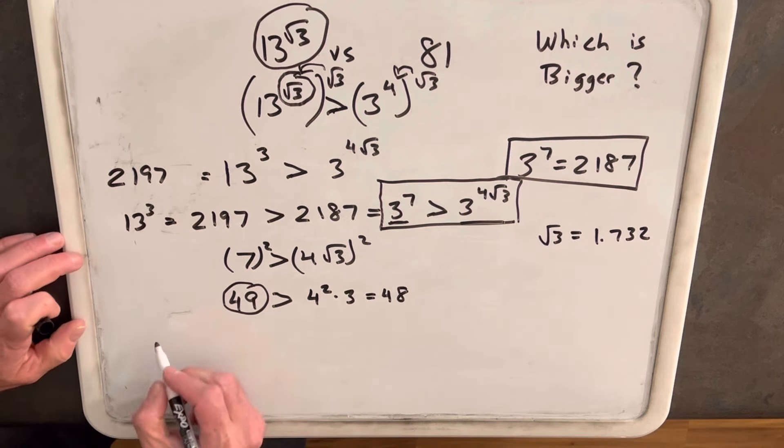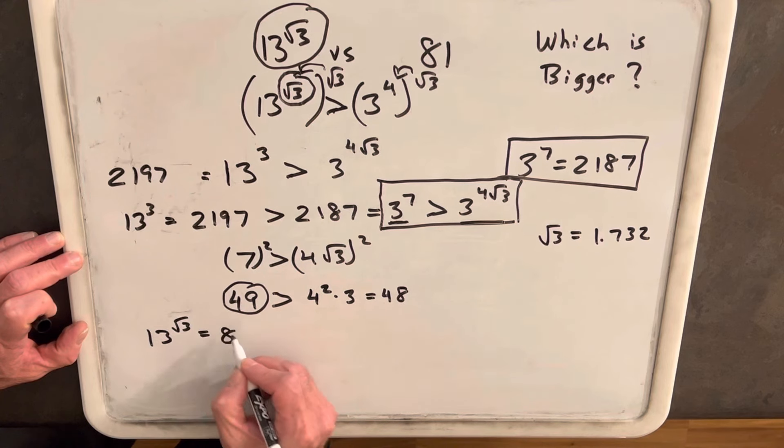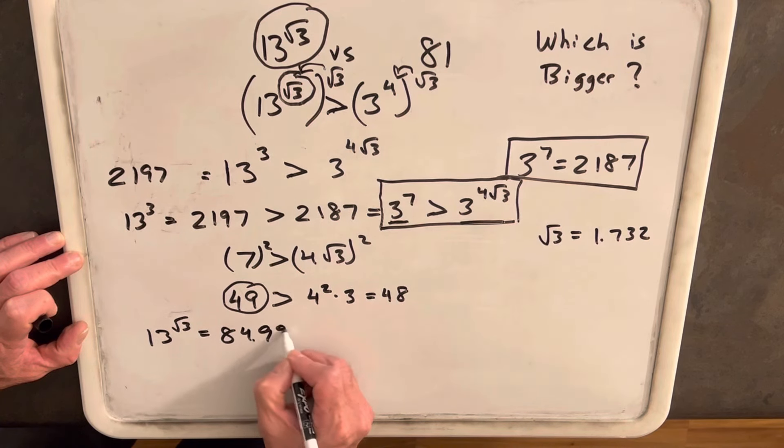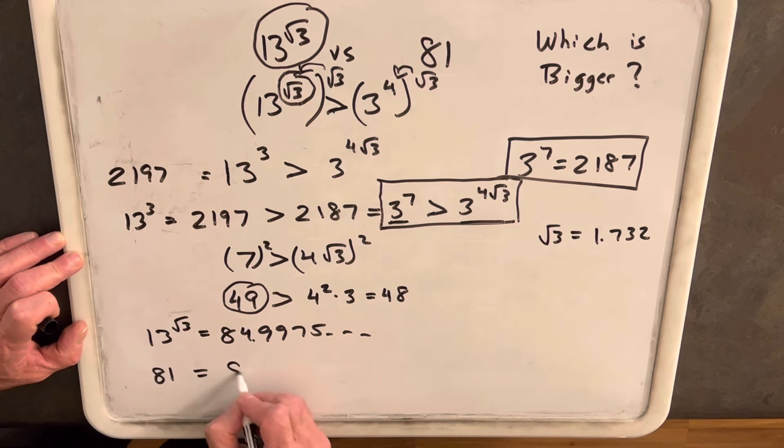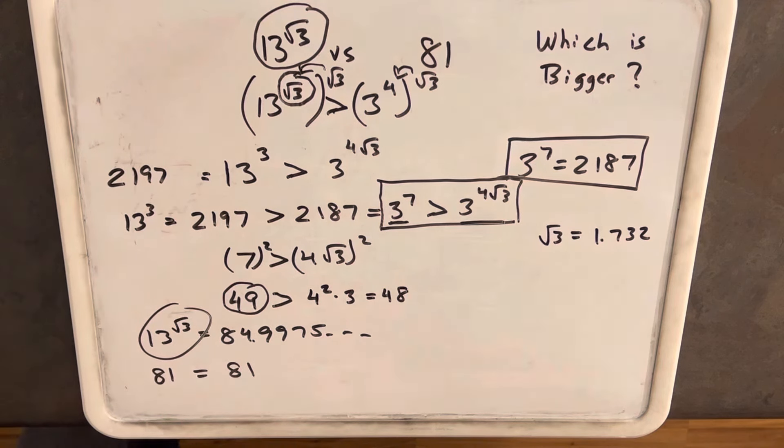Just to confirm, I put this in my calculator, and I got for 13 to the square root of 3, this value came out to 84.9975 something. And 81 is just 81, so clearly 13 to the square root of 3 is greater than 81.